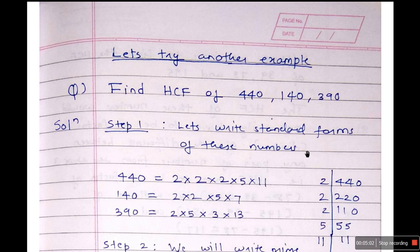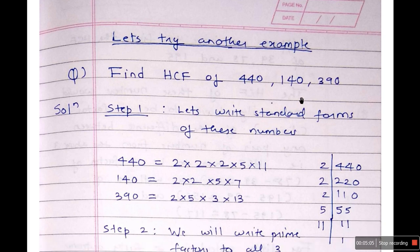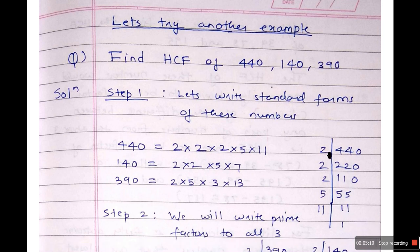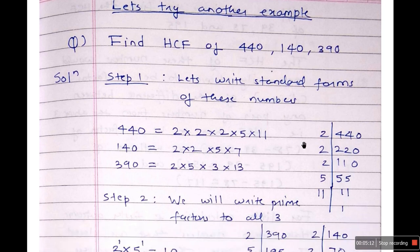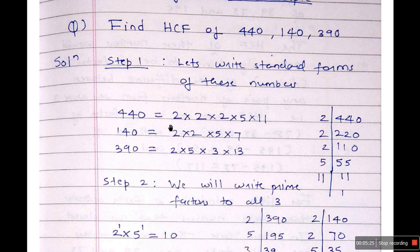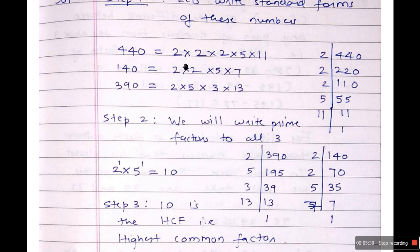Now we'll try another example. Find HCF of 440, 140, and 390. Let's write down the standard forms of all three numbers. 440: divide by 2 → 220, by 2 → 110, by 2 → 55, by 5 → 11, by 11 → 1. So standard form of 440 is 2 × 2 × 2 × 5 × 11. Standard form of 140 is 2 × 2 × 5 × 7, and standard form of 390 is 2 × 5 × 3 × 13.